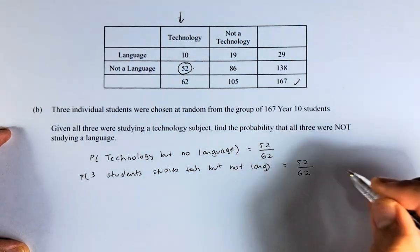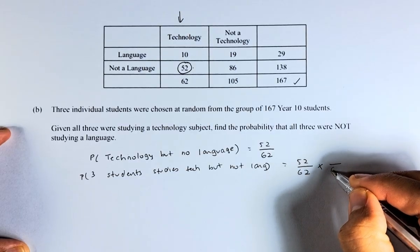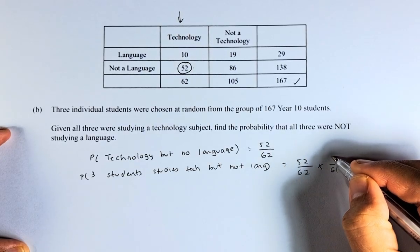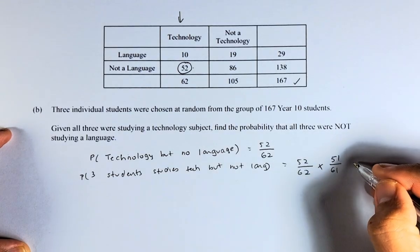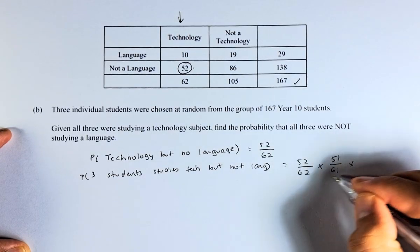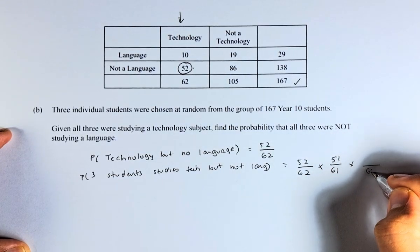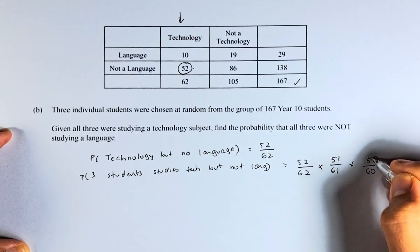Then the next student, if you have taken one student, it's left with 61. And one has been taken from here, so it's 51 over 61. And the third student, because once the two students have been taken out, it's going to be out of 60, and the number of people will be 50.